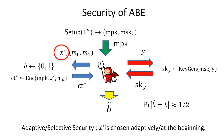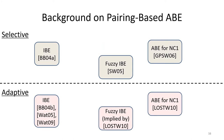We want an ABE scheme to have adaptive security because this is a much more natural notion than selective security. We have various constructions of ABE from bilinear maps. Basically, we have adaptively secure counterparts for selectively secure constructions of ABE. In this sense, adaptive security in pairing-based ABE is well understood.